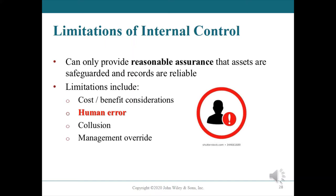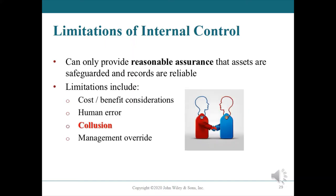For example, if a receiving clerk was not well trained or did not understand the importance of counting goods received, they may not bother to do so, resulting in the wrong amount of inventory being added to the records. Occasionally, two or more individuals may work together to get around prescribed control activities — known as collusion. Such collusion can significantly reduce the effectiveness of internal control because it eliminates the protection expected from segregation of duties. If a supervisor and cashier collaborate to understate cash receipts and steal the shortfall, the system of internal control may be defeated.